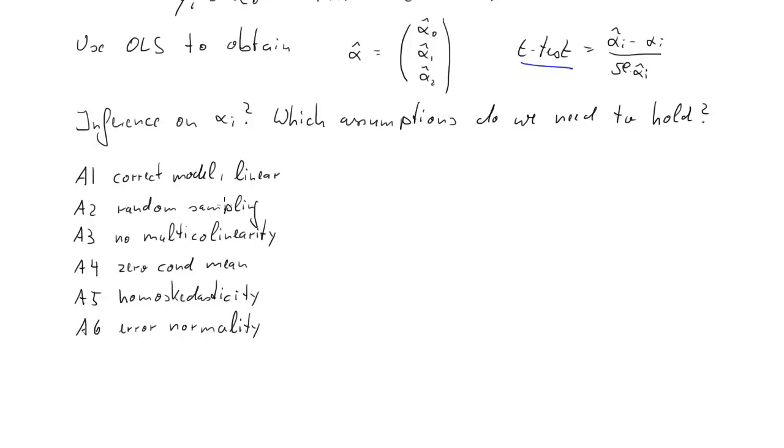So the question is when can we perform inference using the t-test. If all six assumptions are met, the classical linear regression model assumptions, the t-test will follow a t-distribution. If only the first five are met, then the t-test is asymptotically normally distributed.